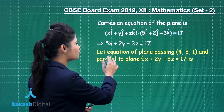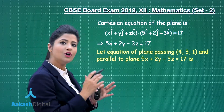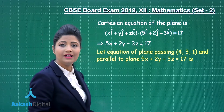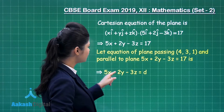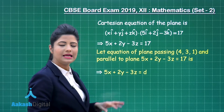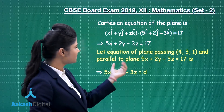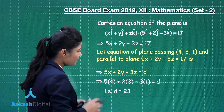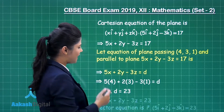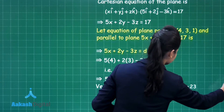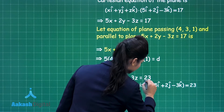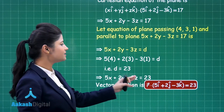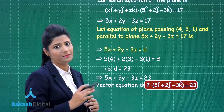In the second part, we are asked to obtain the equation of the plane passing through the point (4, 3, 1) and parallel to the above obtained plane. The equation will be given by 5x + 2y - 3z = d. Since this plane passes through (4, 3, 1), substituting x=4, y=3, z=1 gives d = 23. So the required vector equation of the plane through (4, 3, 1) parallel to the above plane uses d = 23.